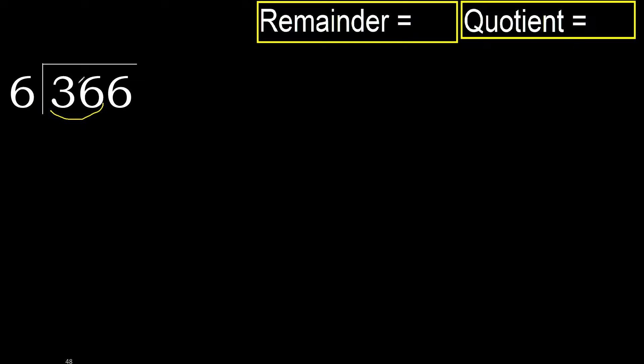With 36, 6 multiplied by which number is nearest to 36 but not greater? 6 multiplied by 7 is 42 — that is greater. 6 multiplied by 6 is 36 — that is not greater.